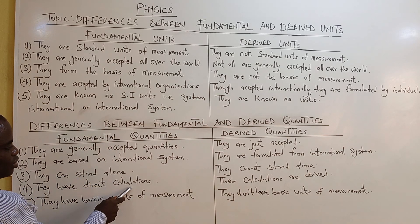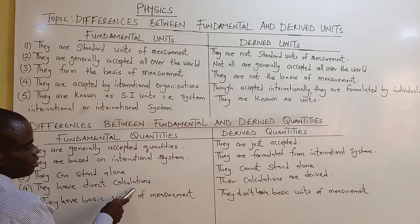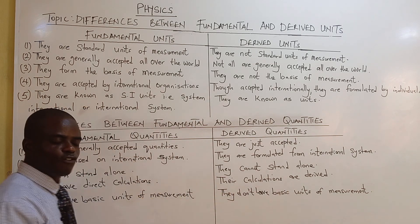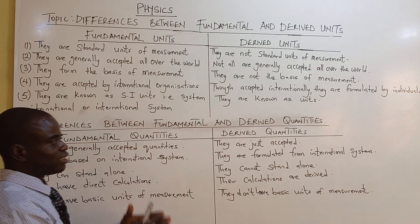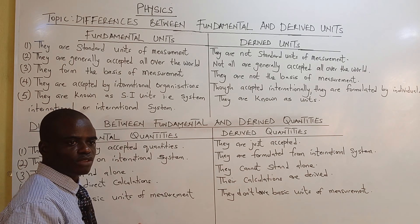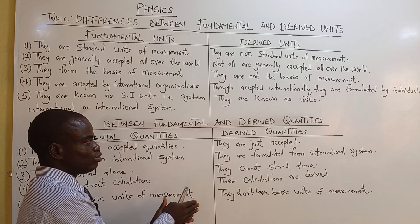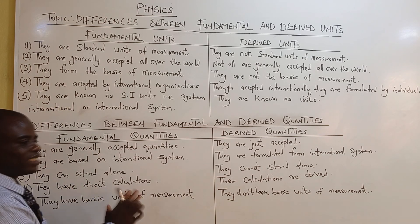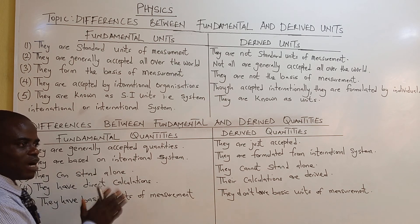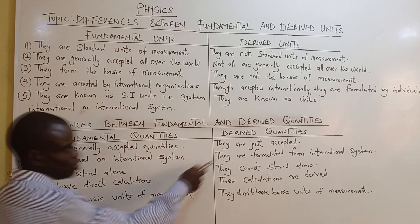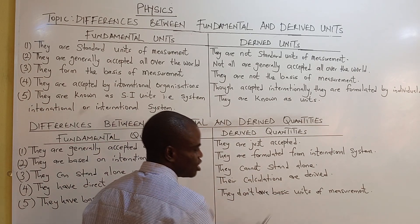Fundamental quantities have direct calculations — for example, time is simply time, and mass is simply mass. Derived quantities require additional calculations; for example, to get volume you must calculate length times breadth times height. Fundamental quantities have basic units of measurement, whereas derived quantities do not have basic units of measurement.